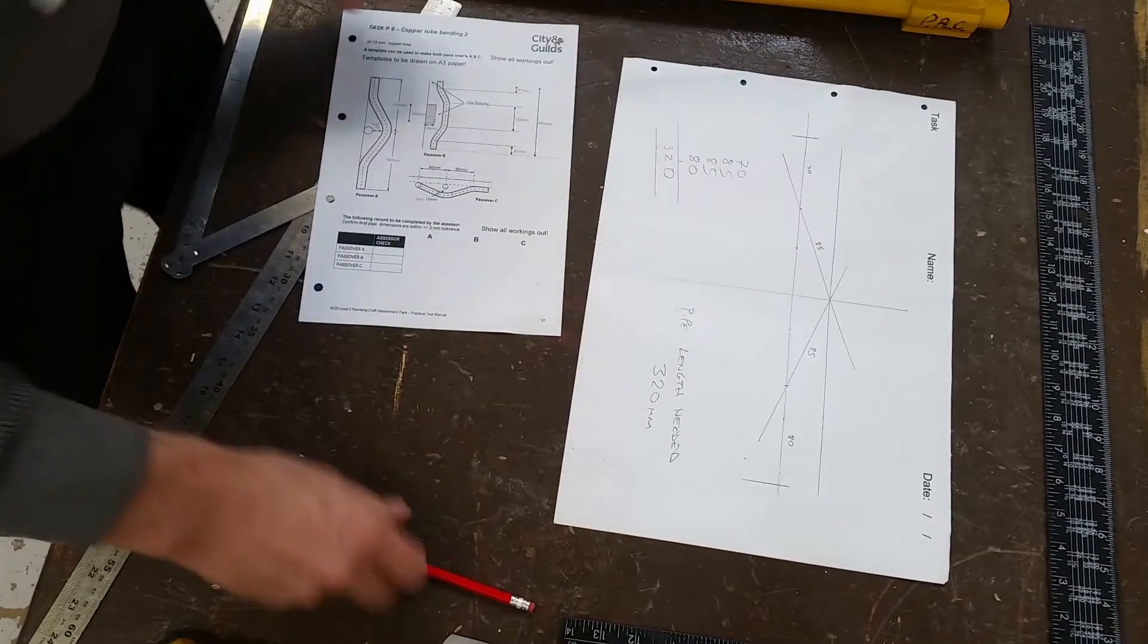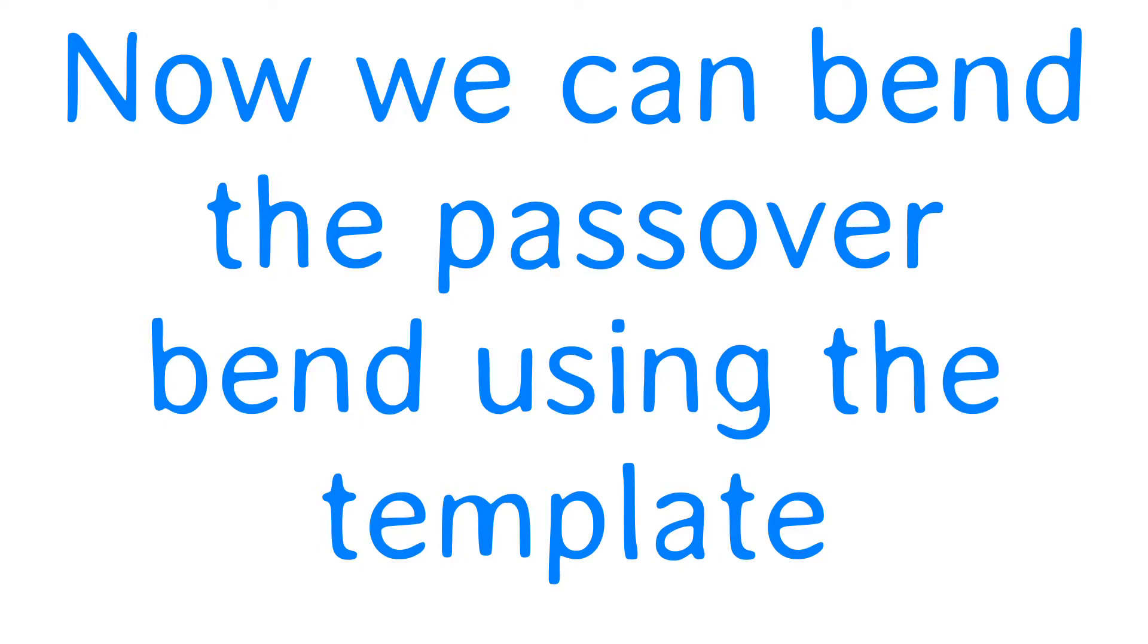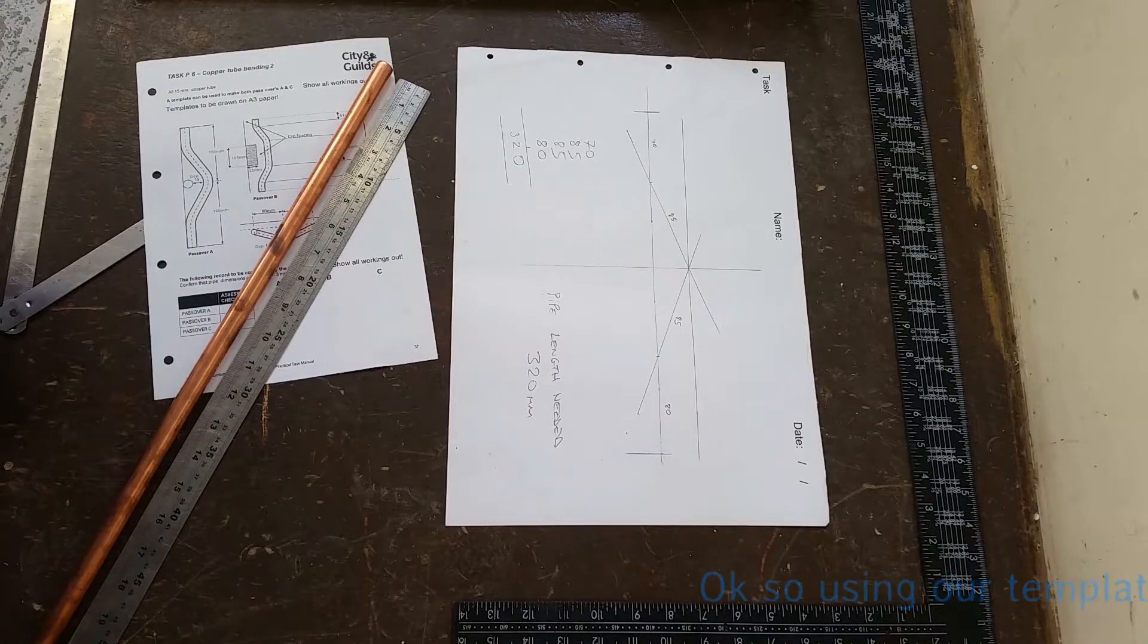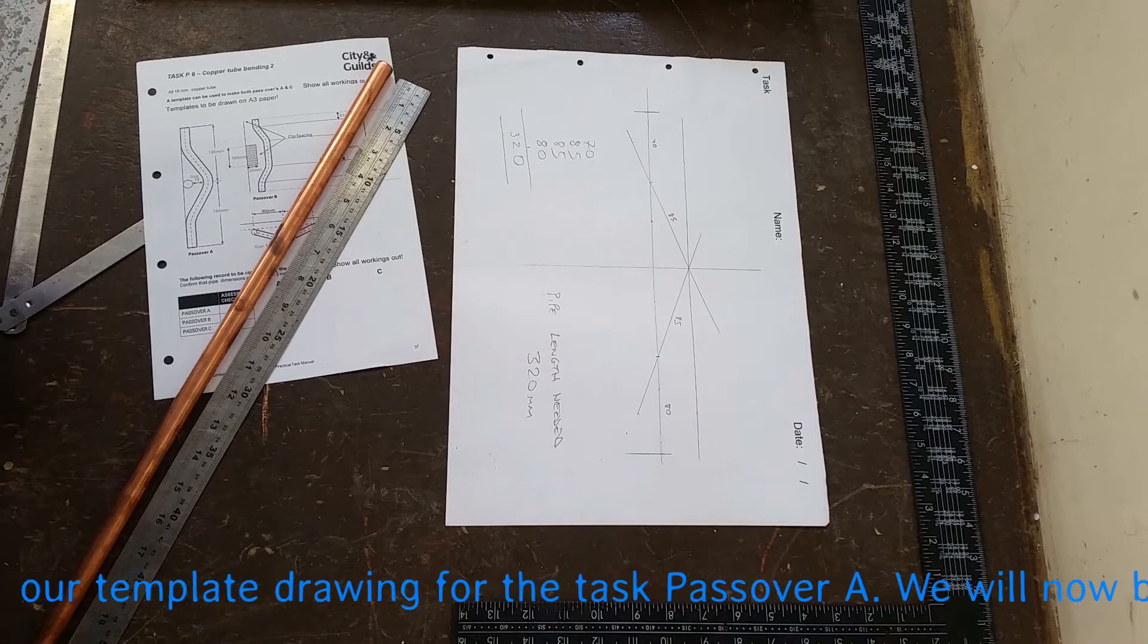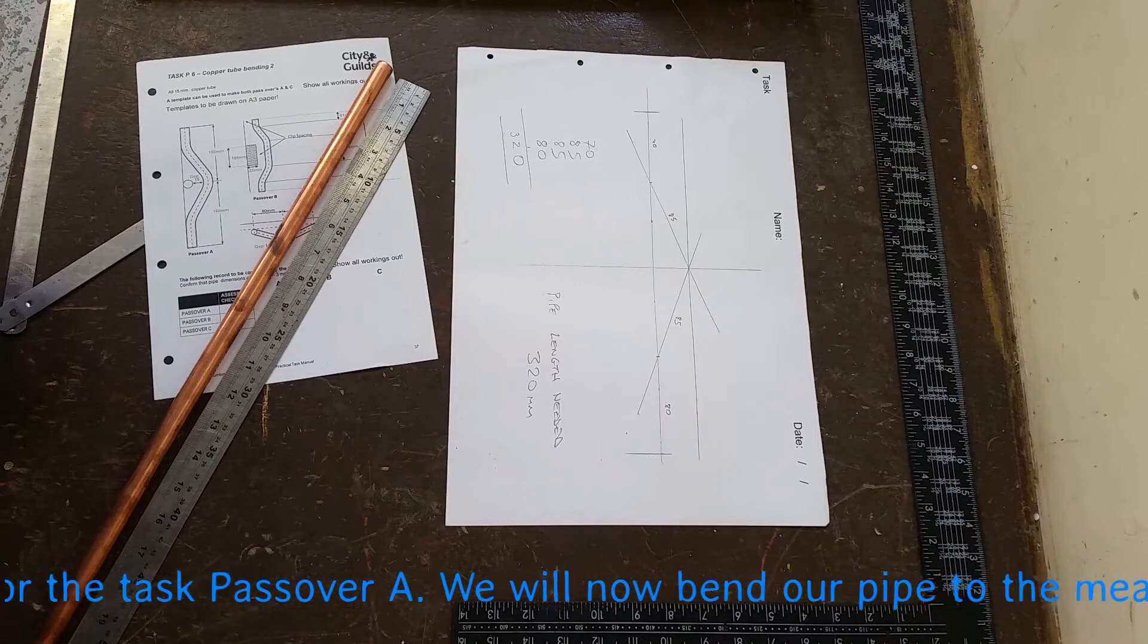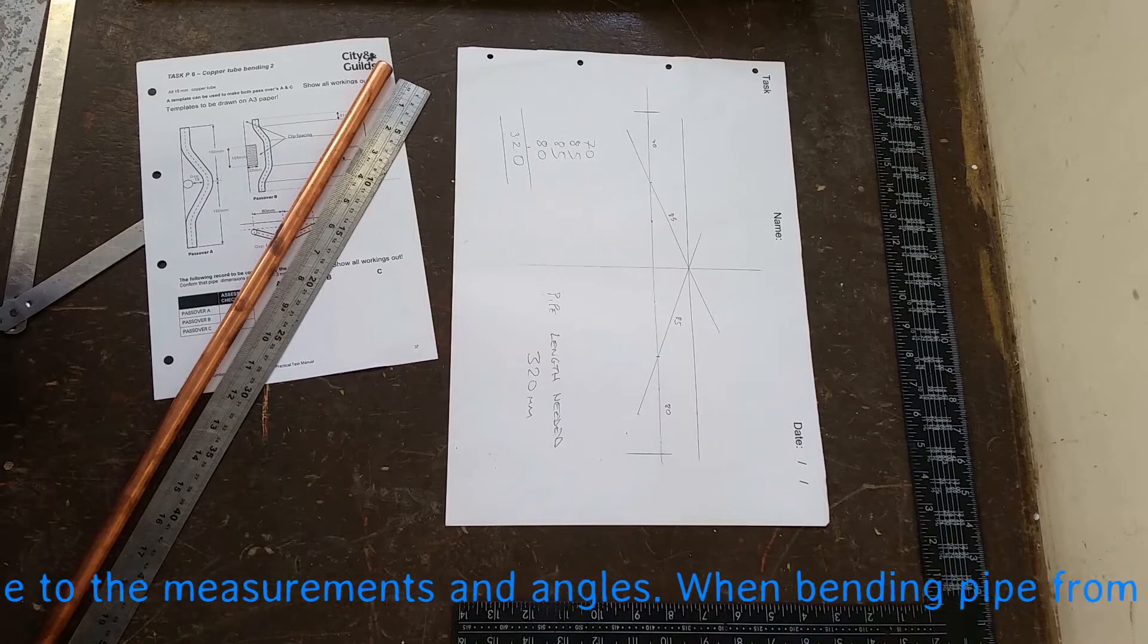That is task C, which you would have to put at the top. So now we've done our drawing, let's bend the pipe. First thing we need to do is to cut our pipe. We measure the pipe, and then we're going to cut it, and using the angles and the measurements from the drawing.